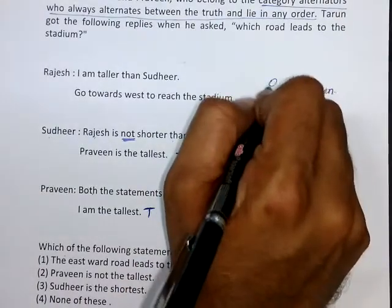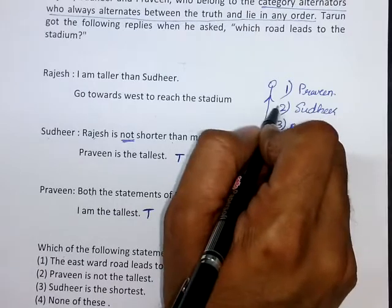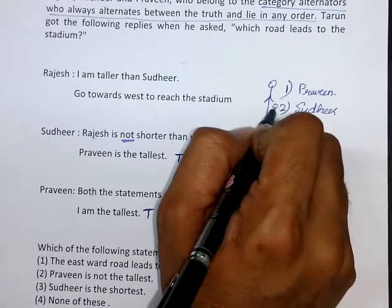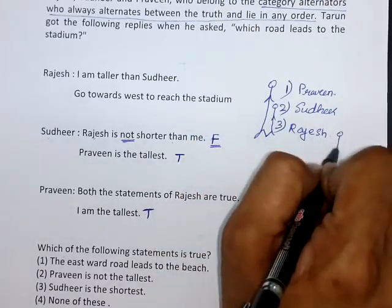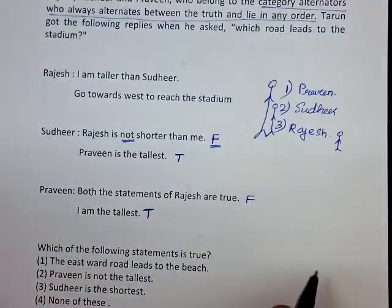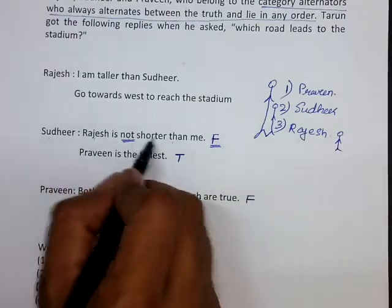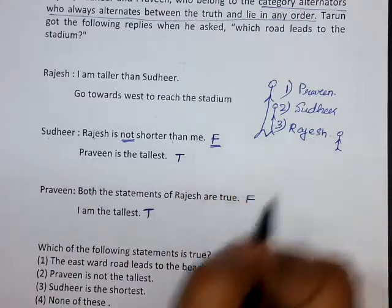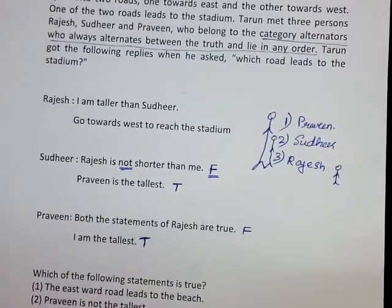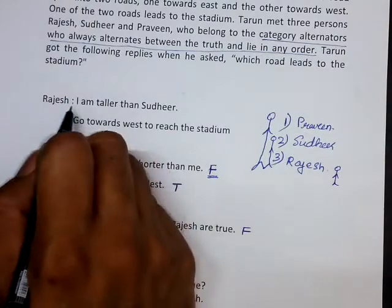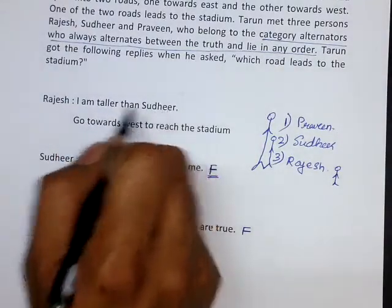If I arrange them according to height: Praveen is the tallest, Sudhir is the second tallest, and Rajesh is the shortest. We can confirm that Rajesh is shorter than Sudhir.